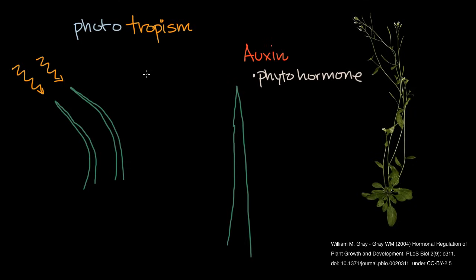What we know happens is: let's say the light is coming from the left. For various reasons, you have an increased concentration of active auxin on the side of the plant away from the light. So you're going to have more auxin on the right than on the left.